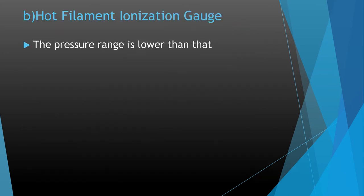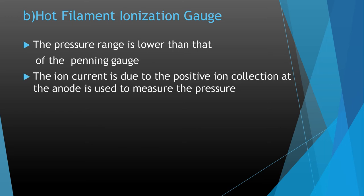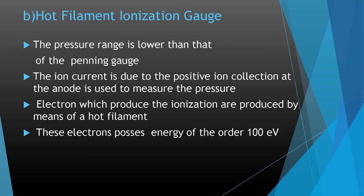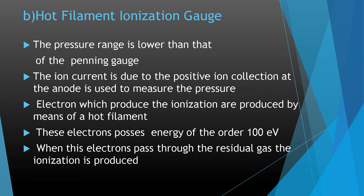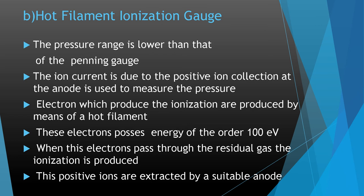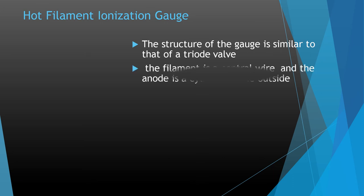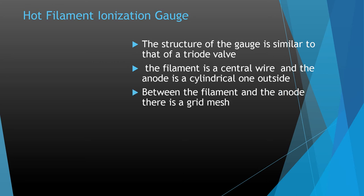The ion current due to positive ion collection at the anode is used to measure the pressure. In the hot filament ionization gauge, the electrons which produce the ionization are generated by a hot filament and possess energy of the order of 100 eV. When these electrons pass through the residual gas, ionization is produced, and the positive ions are extracted by a suitable anode. The structure of the gauge is similar to that of a triode valve — the filament is the central wire, the anode is a cylindrical structure outside, and between the filament and the anode there is a grid mesh.